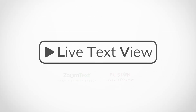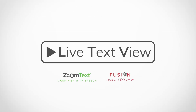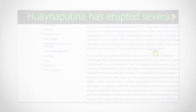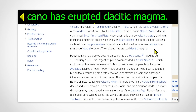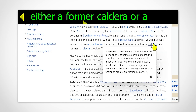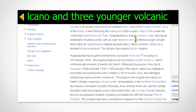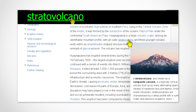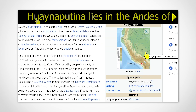Introducing Live Text View, available on ZoomText and Fusion. Live Text View is a screen magnifier feature that's specifically designed to improve the readability of on-screen text in web browsers and other applications.